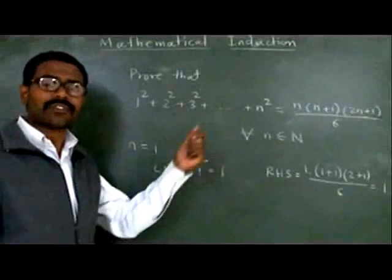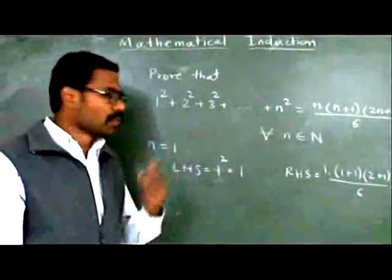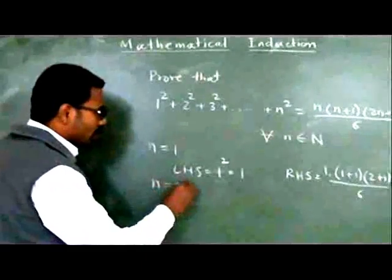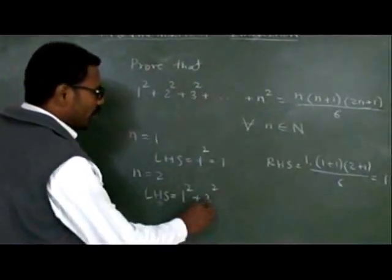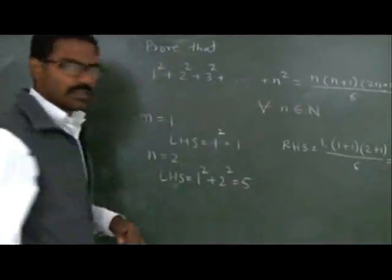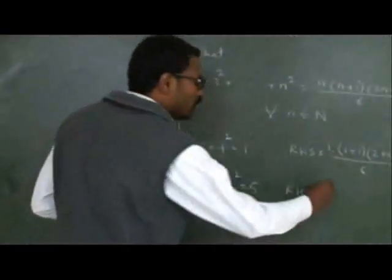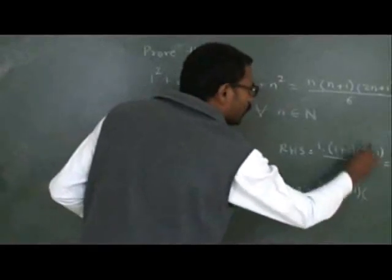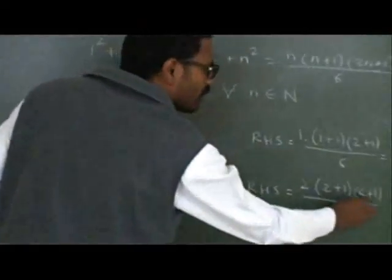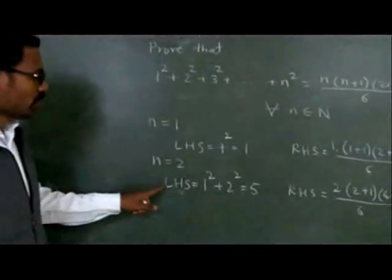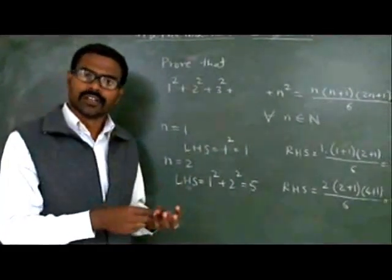But does that mean the formula is true for all natural numbers? We've only checked n=1. Let's try n=2. For n=2, LHS becomes 1 squared plus 2 squared = 1 + 4 = 5. On the RHS, we have 2 × (2+1) × (2×2+1) / 6 = 2 × 3 × 5 / 6 = 30/6 = 5. So again LHS equals RHS, and this formula holds for n=2 as well.